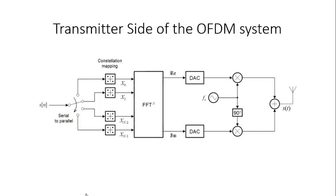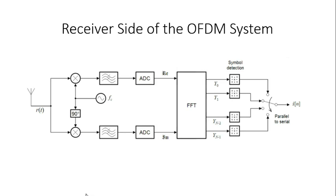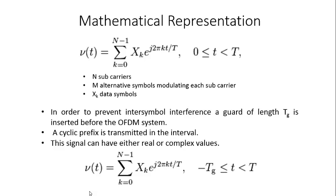This figure shows the transmitter side of the OFDM system. This figure shows the receiver side of the OFDM system. The mathematical representation of the OFDM system is shown here, with N sub-carriers, M alternative symbols modulating each sub-carrier, and XA data symbols. In order to prevent inter-symbol interference, a guard of length Tg is inserted before the OFDM system, which imposes a cyclic prefix in the transmitted signal. The new signal obtained is shown in the second equation.